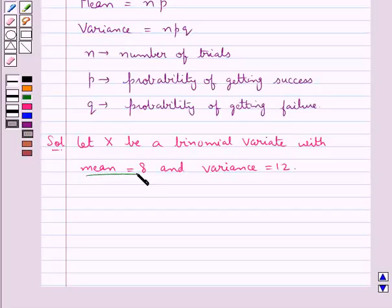As the mean equals 8, we have np = 8. And as the variance equals 12, we have npq = 12. Let this be equation 1 and this be equation 2.